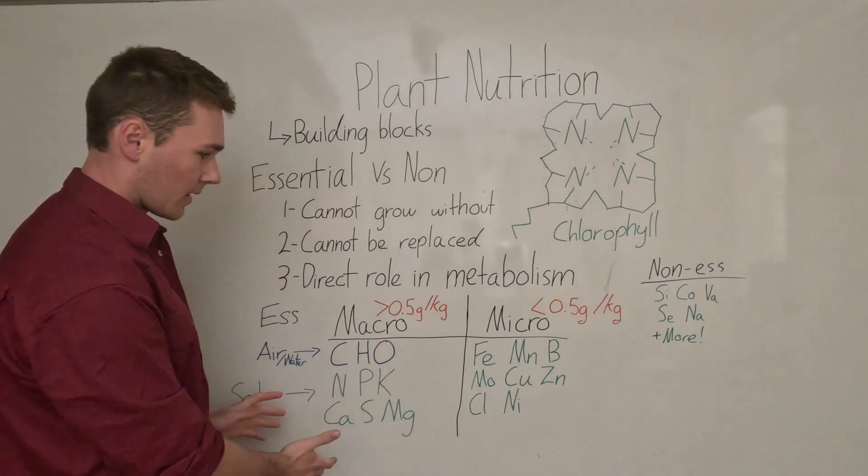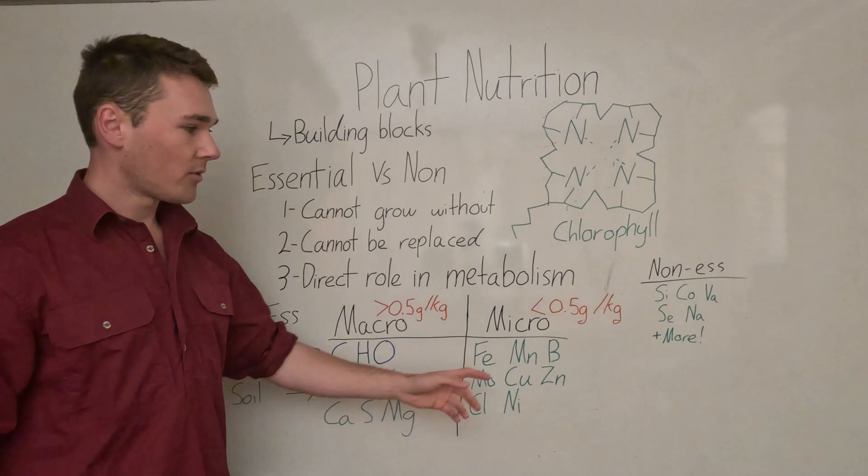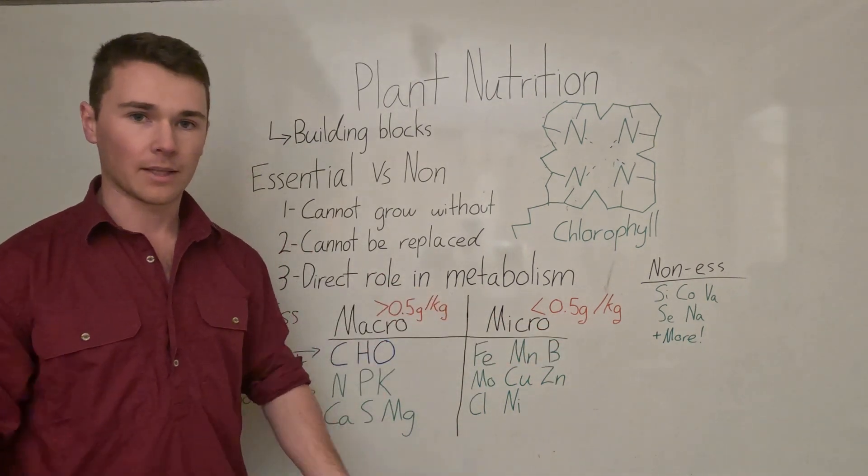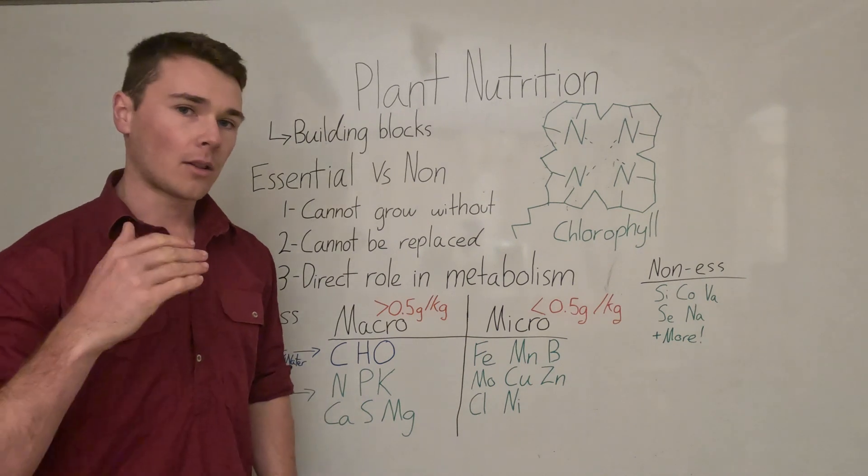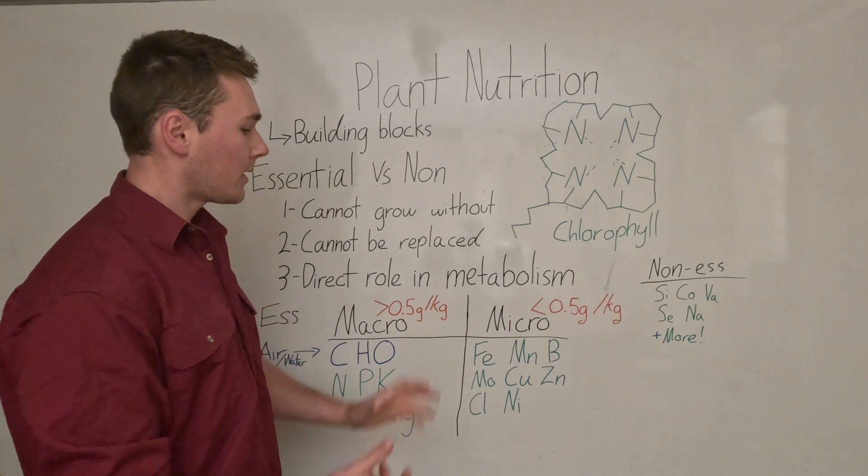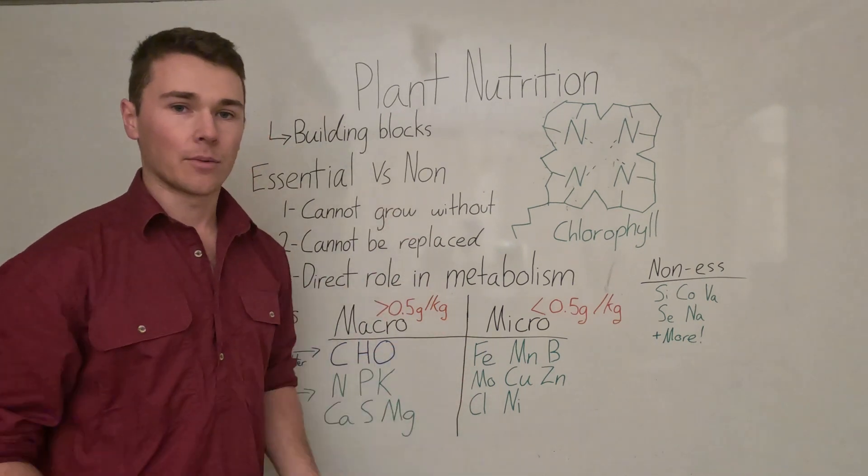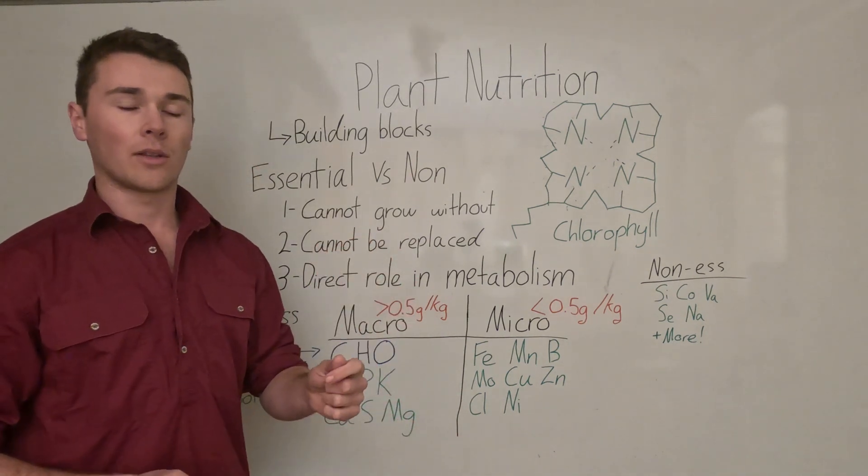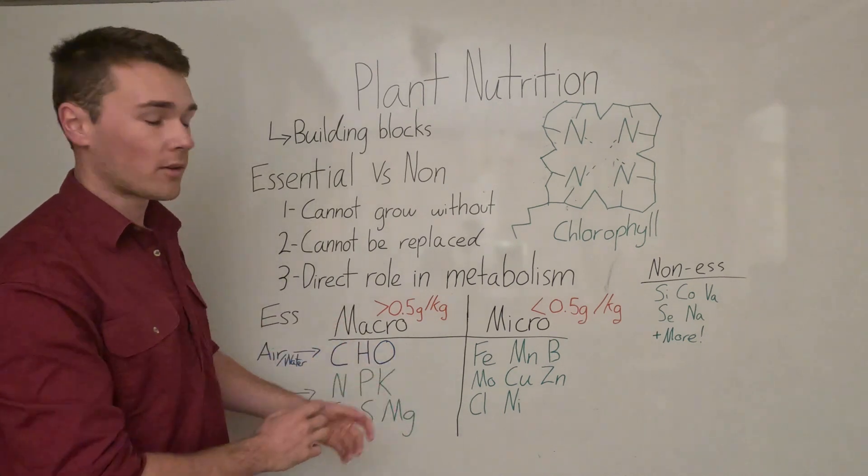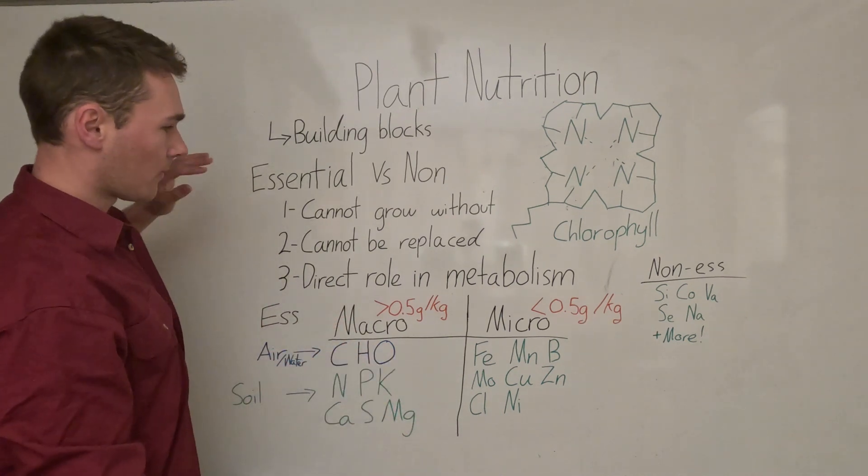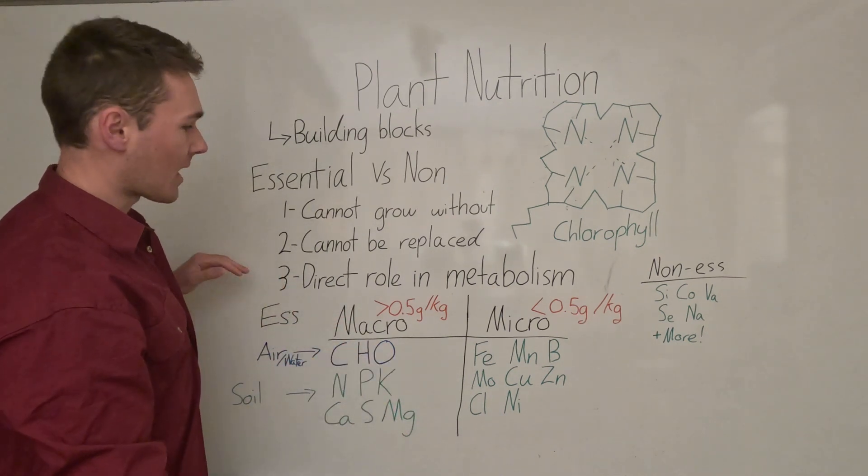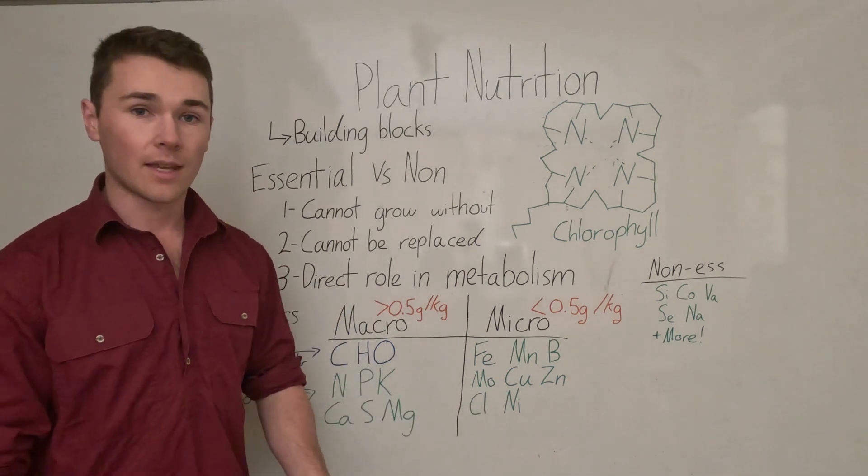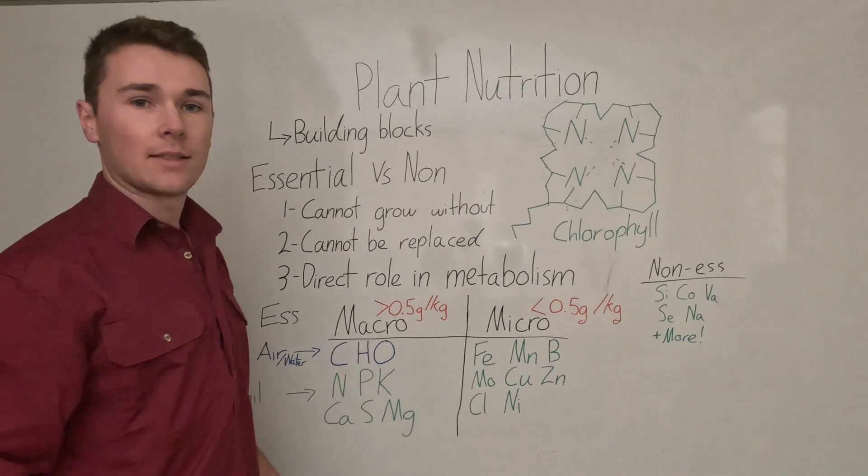The microbes there's less than 0.5 grams per dry kilo of weight of the plant. A lot of people get confused - it says micro so they're not as important, but that's incorrect. Micros are just as important as your macros, you just need to supply them in less quantity. Just as important - remember it cannot grow without, the plant cannot be replaced, and it cannot metabolize if that nutrient is not there. They're all important together, which means you need to be applying more than just NPK.